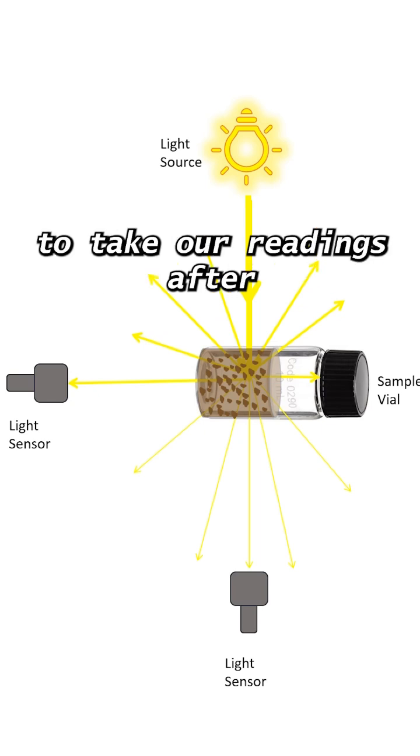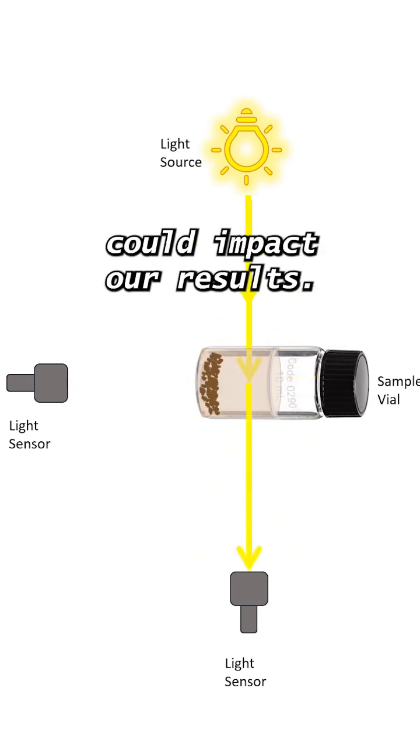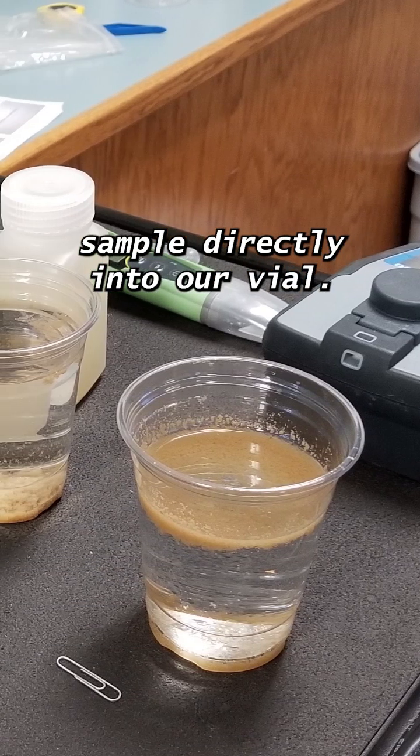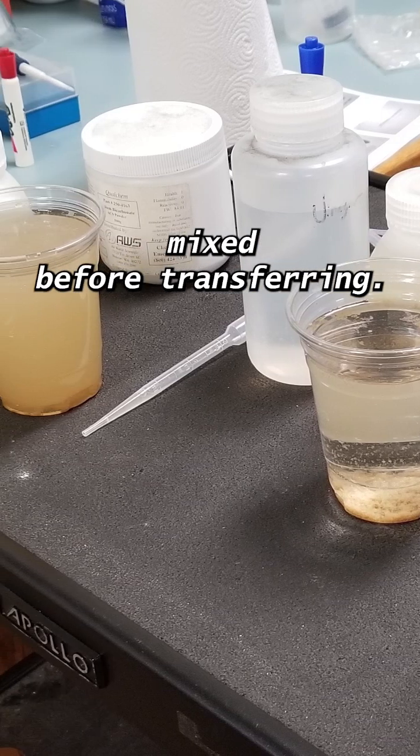We also have a limited time to take our readings after we've collected our sample, as settled particles could impact our results. If possible, we should simply sample directly into our vial, but if we need a secondary container, we want to make sure it's thoroughly mixed before transferring.